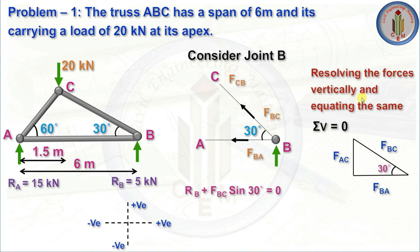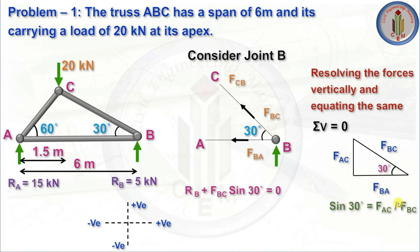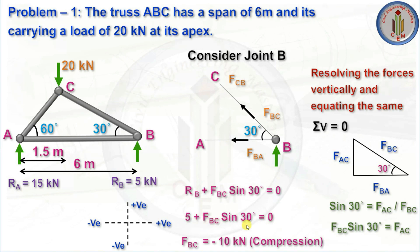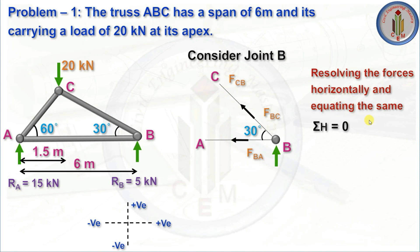Now consider joint B. Resolving forces vertically and equating to zero: RB + FBC sin30 = 0. Using trigonometry, sin30 = FAC / FBC, so FBC sin30 = FAC. With RB = 5 kN, we get FBC = −10 kN. Since we get a negative value, member BC is in compression — the assumed tension direction was incorrect for this member.